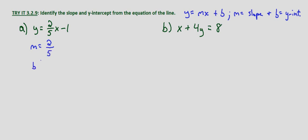b in this case we could rewrite this as 2/5x plus negative 1. So b equals negative 1 which means our slope is 2/5 and our y-intercept is at 0, negative 1.